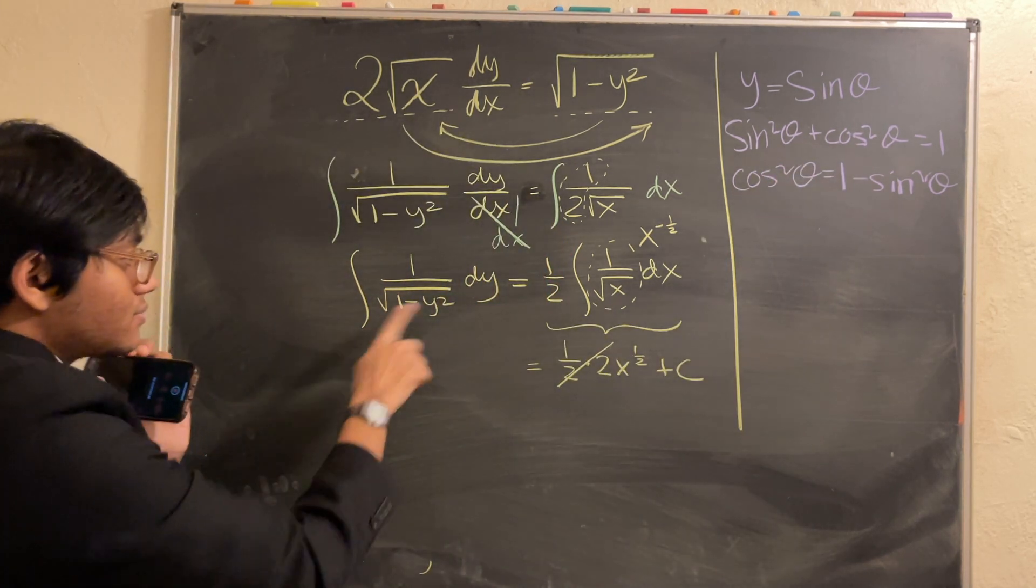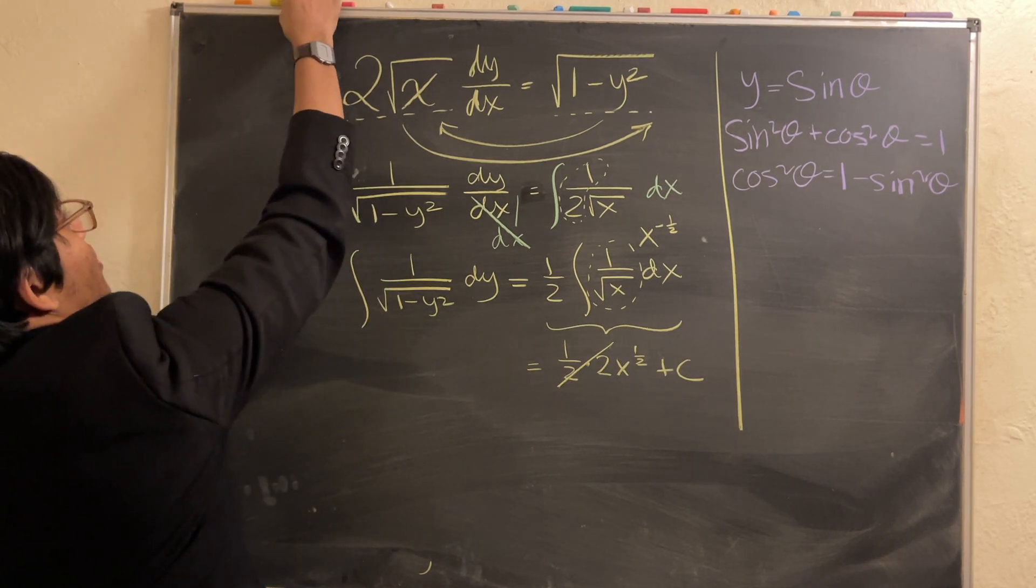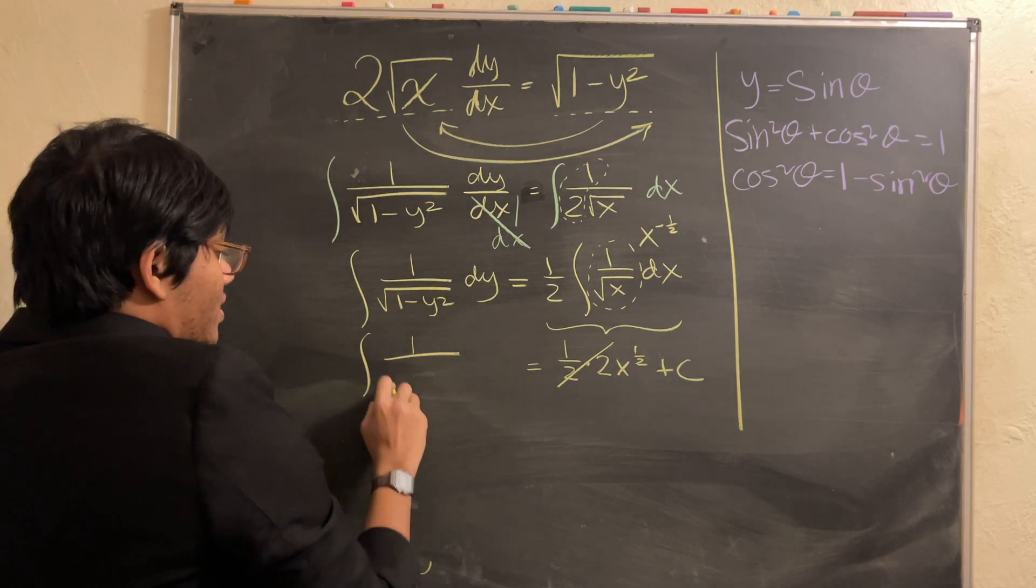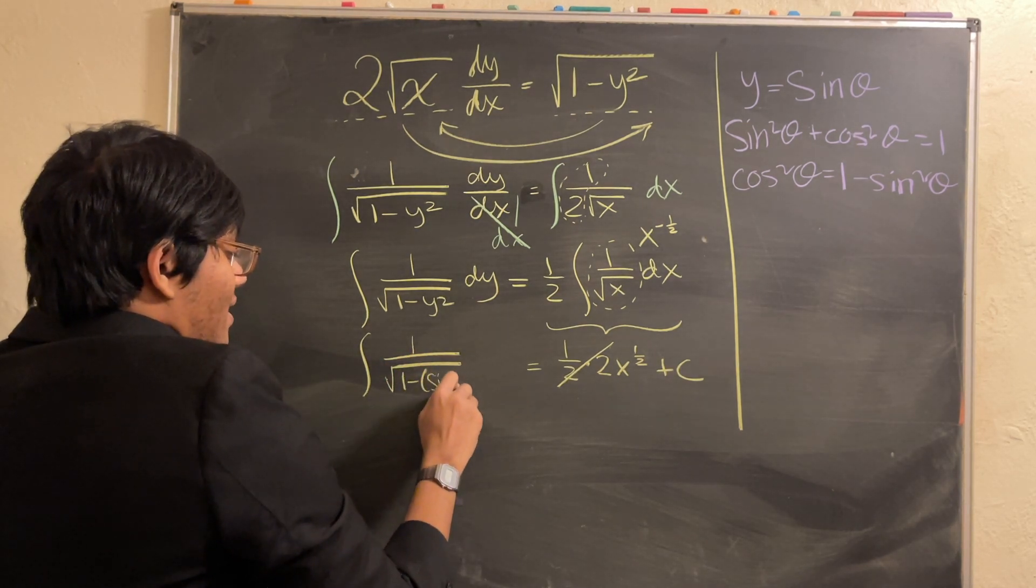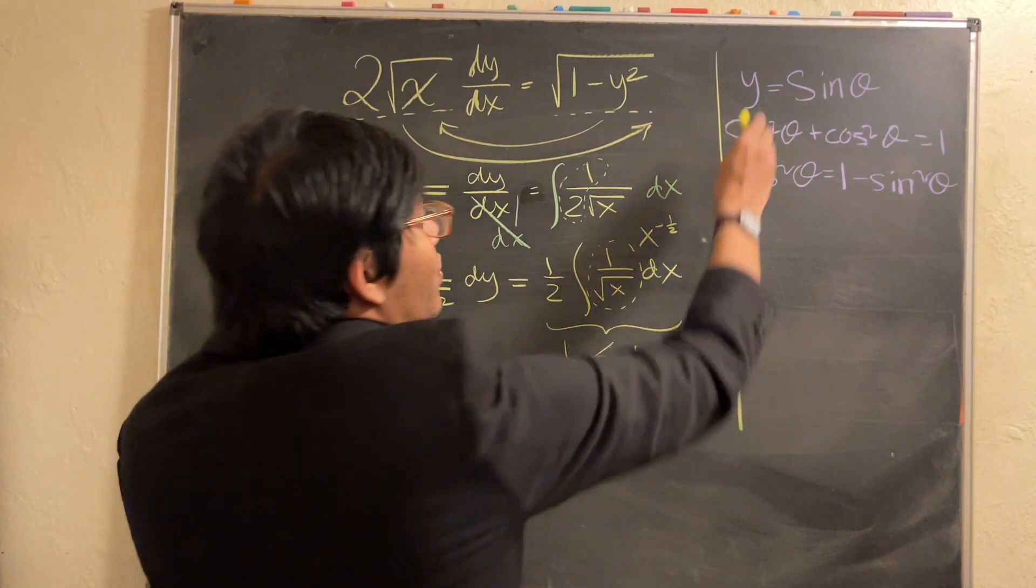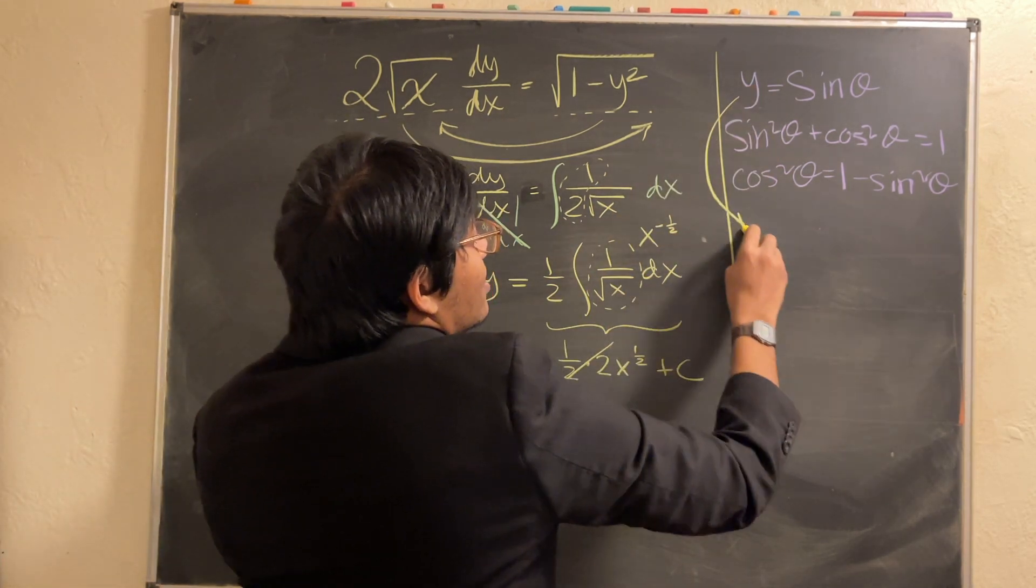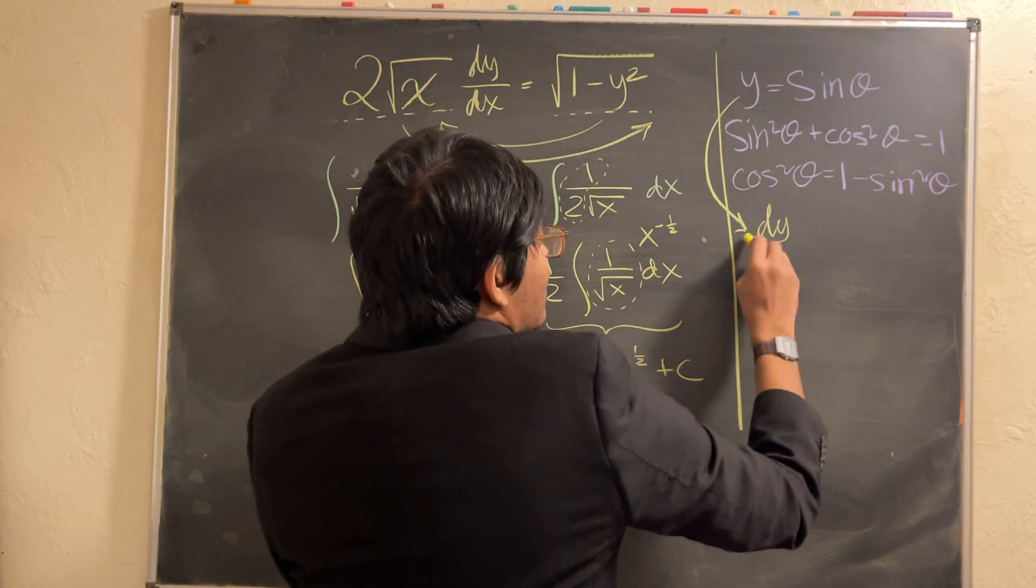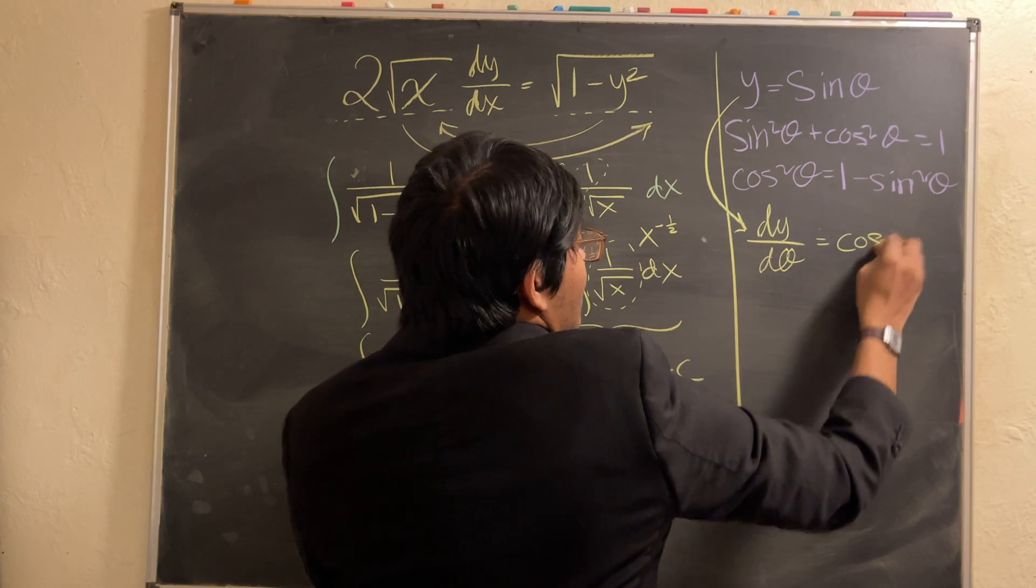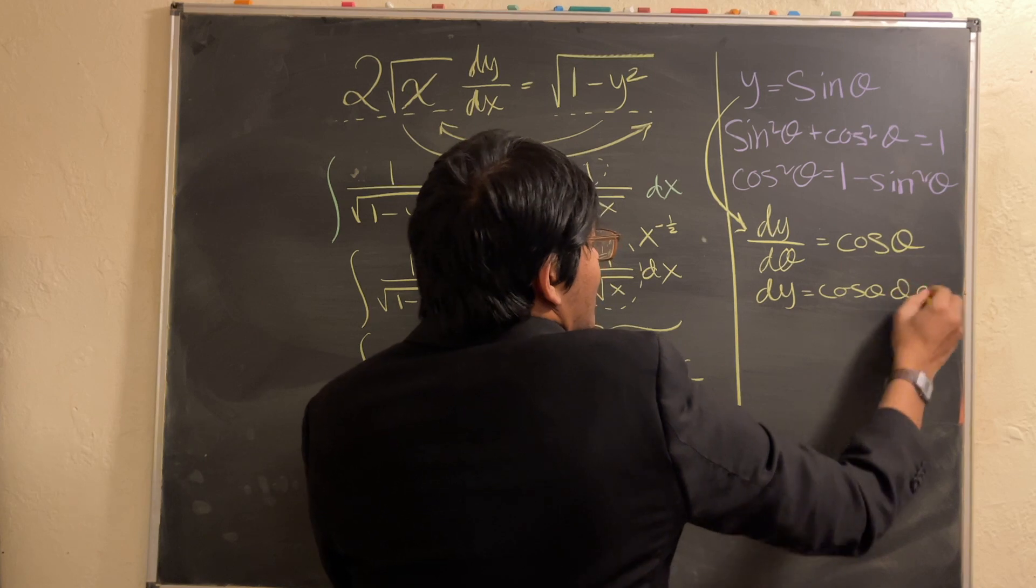And so, if I make that substitution here, what am I going to get? Let me get my yellow marker back. So, I'm going to be left with 1 over the square root of 1 minus sine theta squared. And instead of dy, what am I going to have? Well, I have to rewrite dy in terms of d theta. So, let's go ahead, take the derivative of y with respect to theta. So, dy d theta is simply going to be the derivative of sine theta, which is cosine theta, meaning that dy can be rewritten as cosine theta d theta.